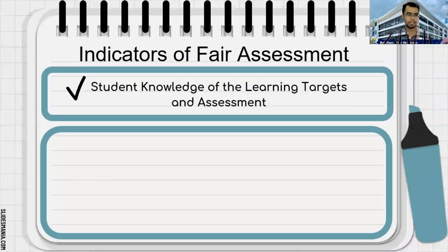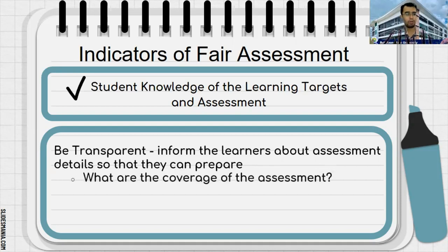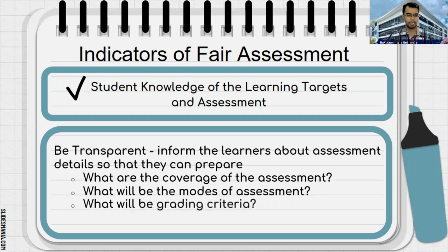The first indicator is student knowledge of learning targets and assessment tasks. As a teacher, you should be transparent and inform learners about the assessment details so that they can prepare. They should be aware of the learning targets — what are the coverage of the exam, what topics are included, what will be the mode of assessment (written test, objective test, essay, or practical exam), whether it is individual, by group, or by pair. You should also inform them about the grading criteria and how they will be graded.